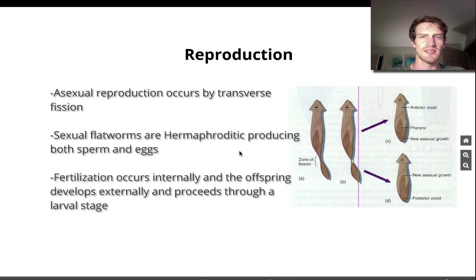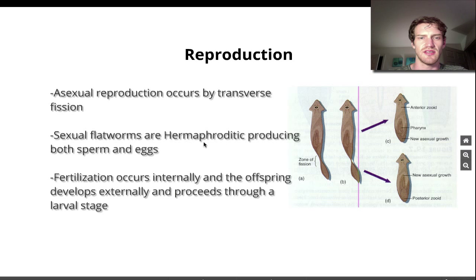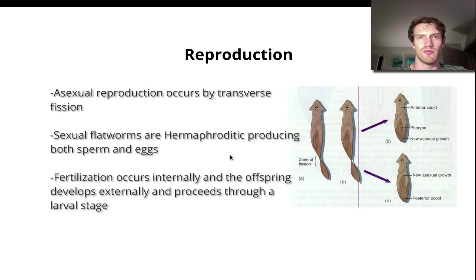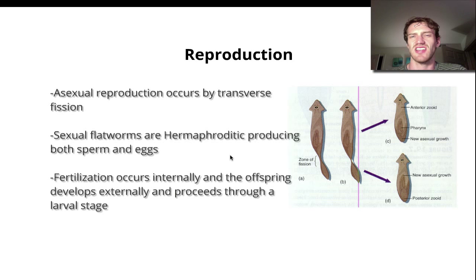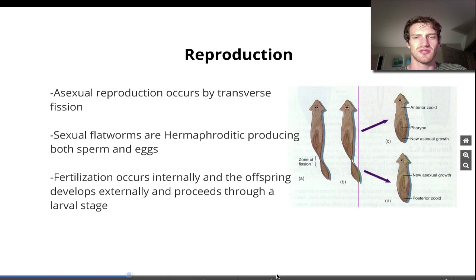They're also sexual, and one individual can produce both sperm and eggs, which means they're hermaphroditic. They can mate with one another and both worms could swim away and produce fertilized eggs. The fertilization occurs internally, the offspring develop externally, and they actually have a larval stage. Some of these you'll find in a cocoon, which is sort of interesting.